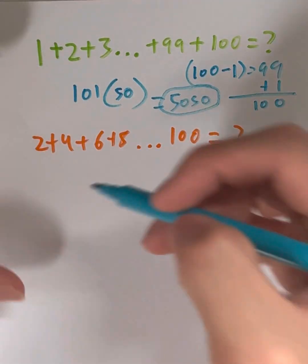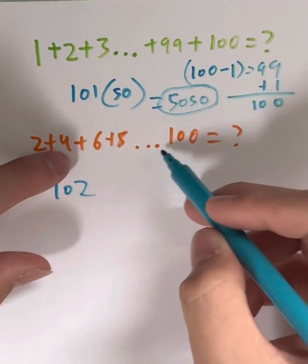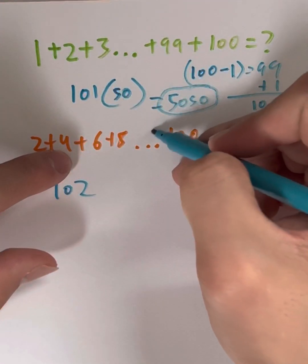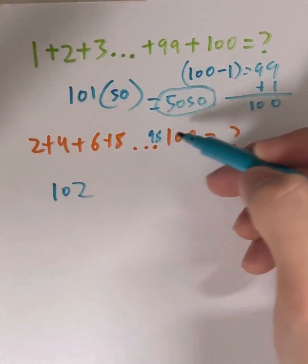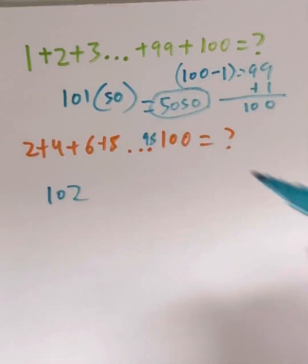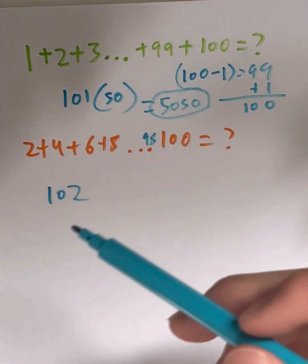We find out the pairing. So 2 plus 100 gives us 102. And 4 plus what's the number before this? It's going to be 98. What's 4 plus 98? It's also 102. How about 6 plus 96? 102. So that means our magic number is 102.